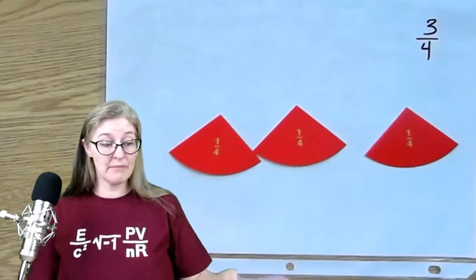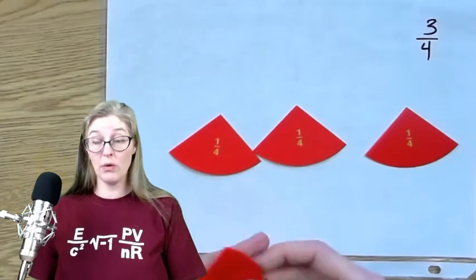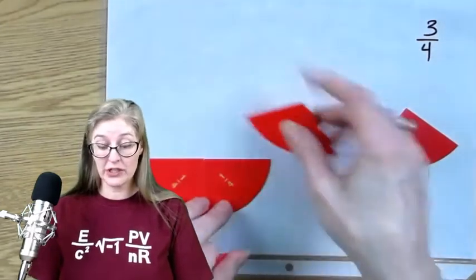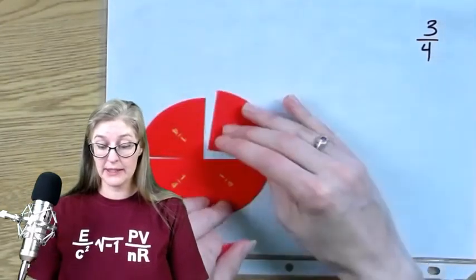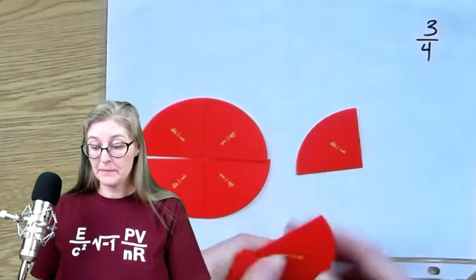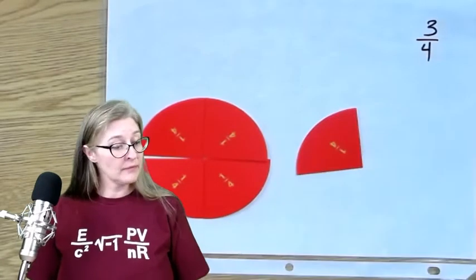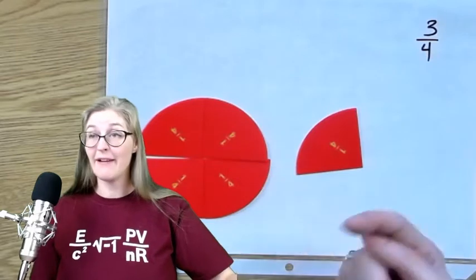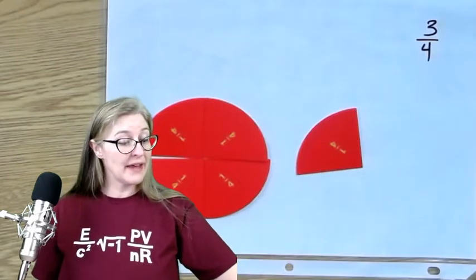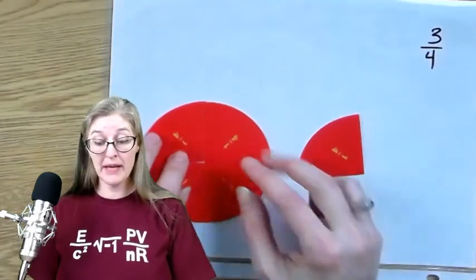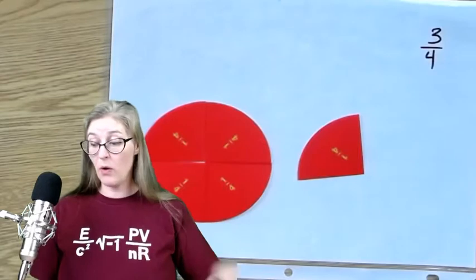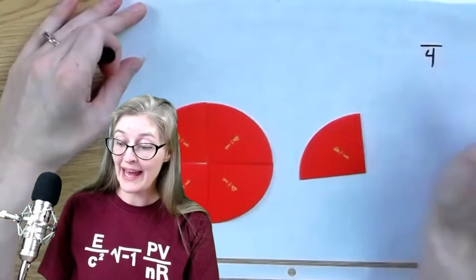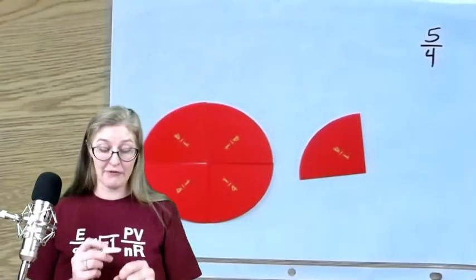If I have more than that, I can start making whole numbers. So let's say instead of just three-fourths, I have one, two, three, four, five pieces. Now at this point, it's bigger than one whole — I now have an improper fraction.